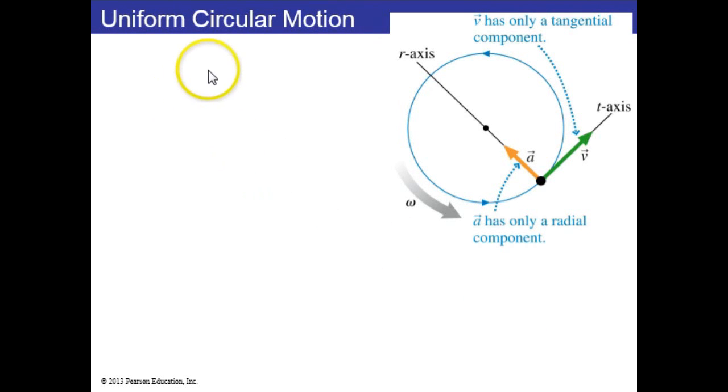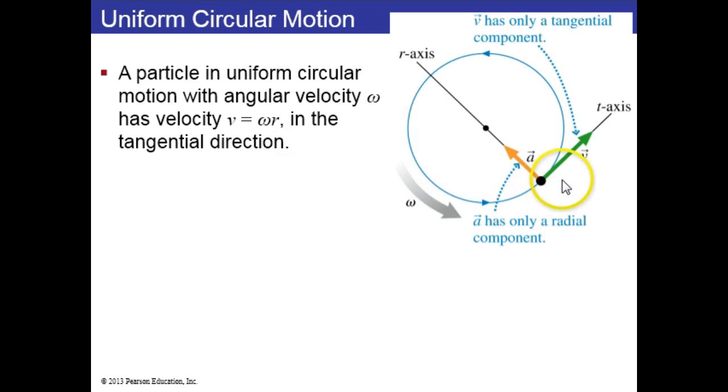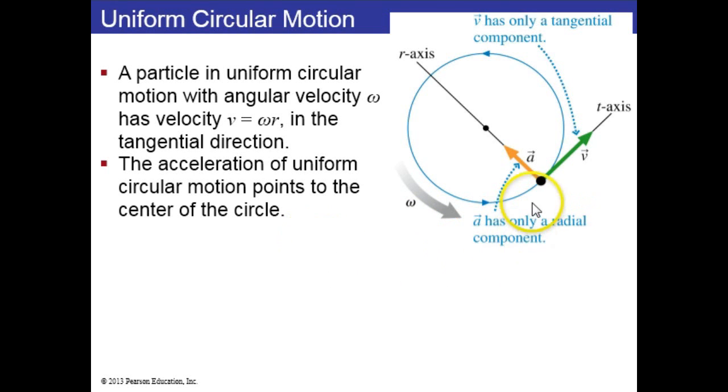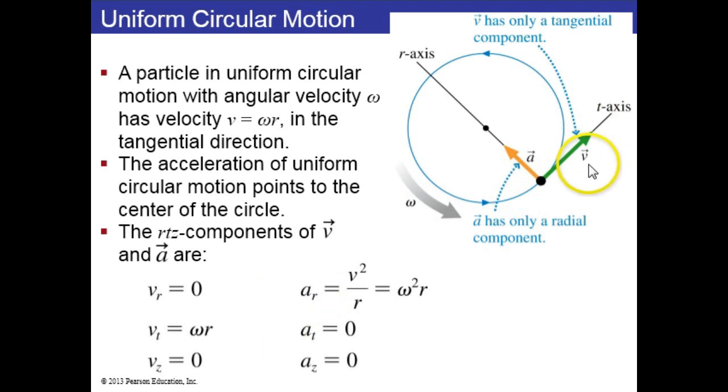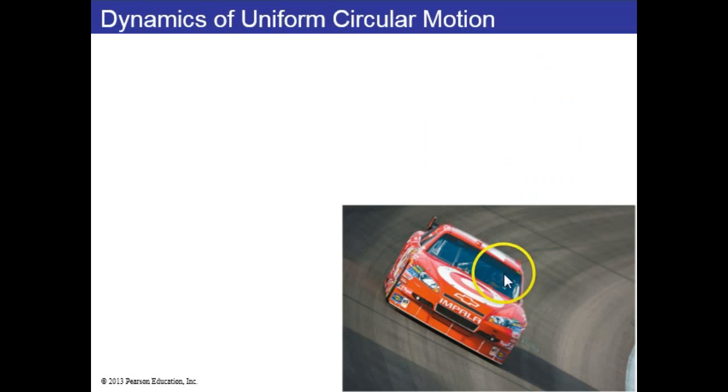Section 8.2 is on uniform circular motion. We have a particle moving on a circular path with some angular velocity, omega, and some speed, v, which is a velocity in the t direction. Here's that t-axis which is going round and round, and the r-axis which always points towards the center of the circle. The acceleration only has a component in the r direction, and the velocity only has a component in the t direction. So v sub r is 0, v sub z is 0, v sub t is omega times r. As for the acceleration, a sub t is 0, it's not speeding up or slowing down, a sub z is 0, and a sub r turns out to be v squared over r, where v is the speed. You can also write this as omega squared times r.